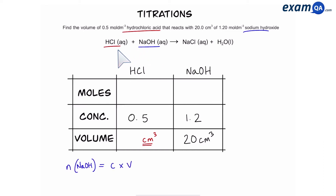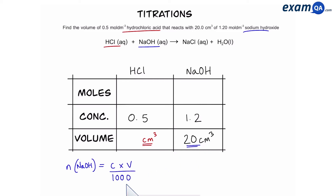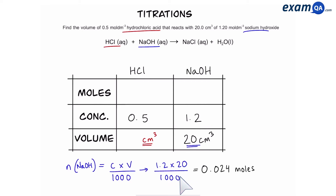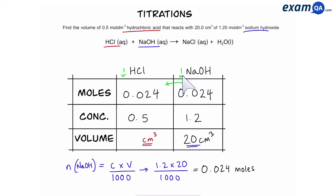Let's start by working out the moles of sodium hydroxide. We're going to use the formula: number of moles equals concentration times volume. Because the volume has been given to us in centimetres cubed, we're going to divide it by 1000. That gives us 1.2 times 20 over 1000, which gives us 0.024 moles. Now that we have the moles of sodium hydroxide, we can see that the equation is a one-to-one ratio, meaning the moles of hydrochloric acid will be the same.